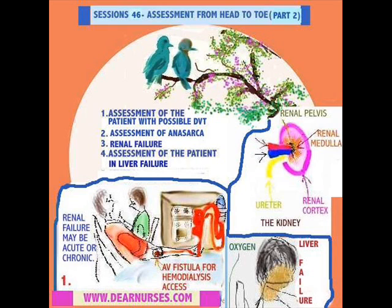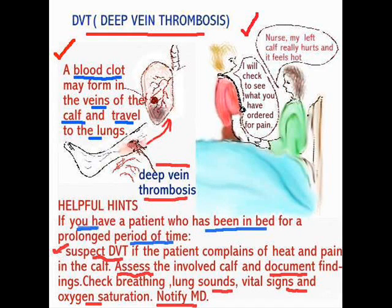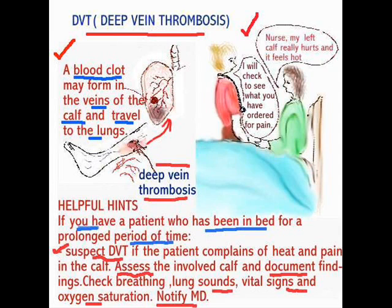Here is a patient who called a nurse and said, 'Nurse, I'm having pain in my calf,' but the nurse gives a very inappropriate response. She says, 'I'll take a look and see what you have ordered for pain.' Pain may be caused by a number of variables. In this case, this patient is having pain because she was a surgical patient who has been in bed for a long period of time, has not been compliant with her TED hose, and has not wanted to move her legs — possibly developing deep vein thrombosis.